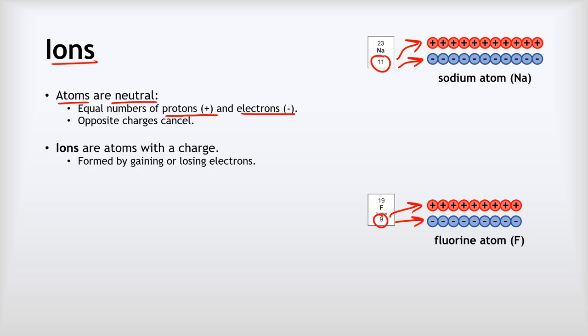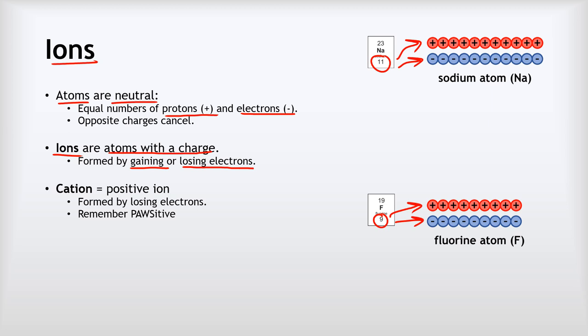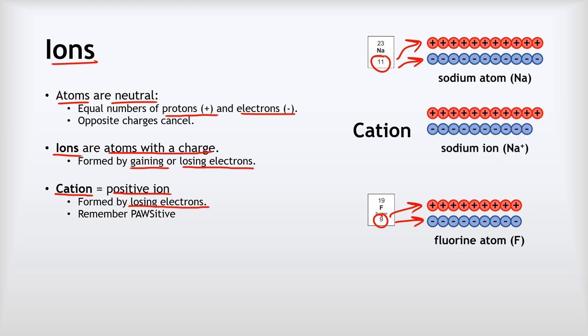Ions are atoms that have a charge, and they are formed by gaining or losing electrons. We have two types of ions: cations and anions. Cations are positive ions that are formed by losing electrons. Let's look at the example of the sodium ion — this forms one of these cations.